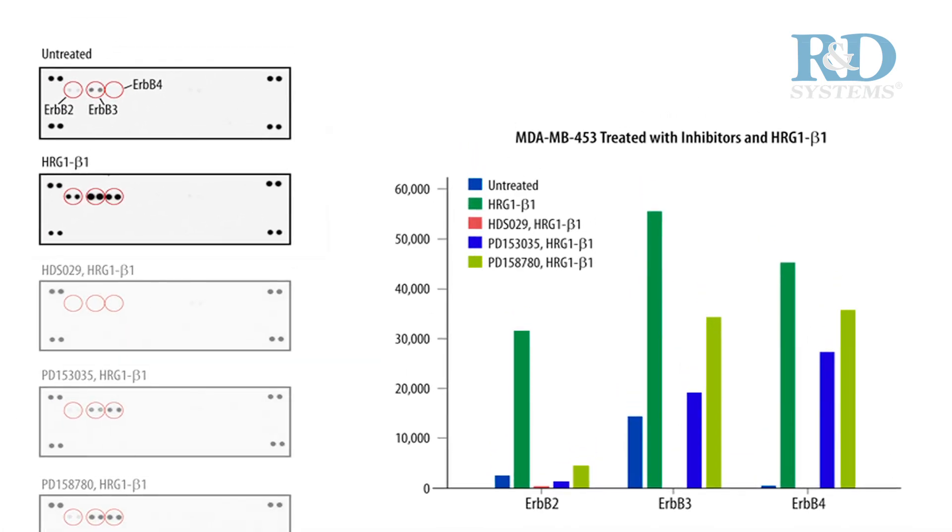An increase in phosphorylation is observed for ErbB2, ErbB3, and ErbB4 capture spots when comparing untreated cells with HRG beta-1 treated MDA-MB453 cells.